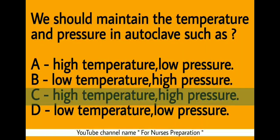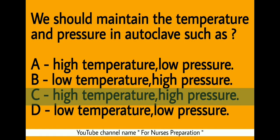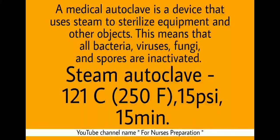Next question: we should maintain the temperature and pressure in autoclave such as? During autoclaving procedure, high temperature and high pressure is used. A medical autoclave is a device that uses steam to sterilize equipment and other objects, meaning that all bacteria, viruses, fungi and spores are inactivated. The standard pressure and temperature during steam autoclaving is 121 degrees centigrade at 15 psi for 15 minutes.